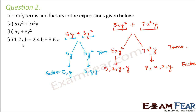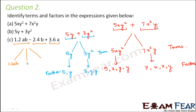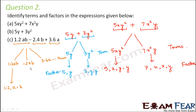The third expression is 1.2ab minus 2.4b plus 3.6a, which has three terms: 1.2ab, minus 2.4b, and 3.6a. The factors of 1.2ab are 1.2, a, and b. The factors of minus 2.4b are minus 2.4 and b. The factors of 3.6a are 3.6 and a.